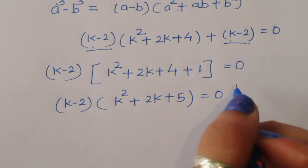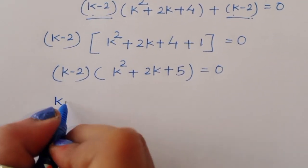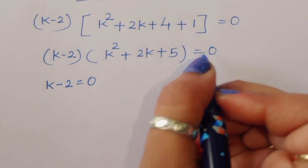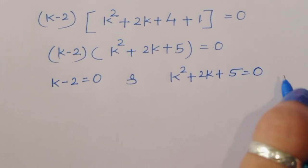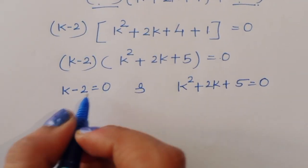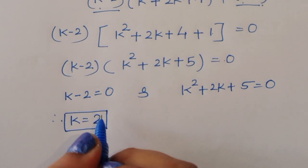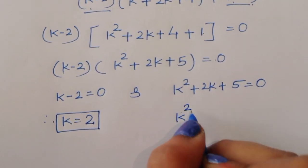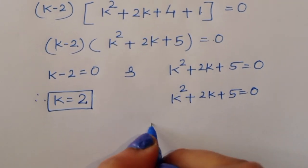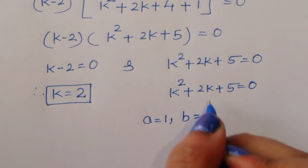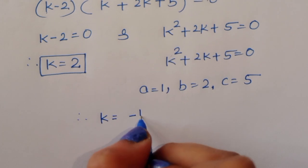Simplifying, we get (k minus 2)(k squared plus 2k plus 5) equals 0. So we have two equations: first, k minus 2 equals 0, giving k equals 2; and second, k squared plus 2k plus 5 equals 0. For the quadratic, the coefficient a equals 1, b equals 2, and c equals 5.